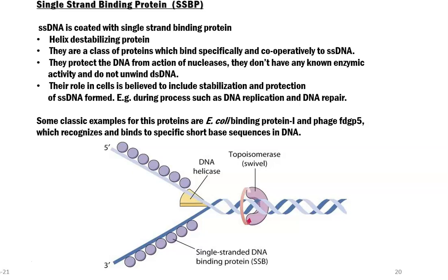This protein is also referred to as helicase destabilizing protein. These are a class of proteins which bind specifically and cooperatively to the single strand DNA molecule after the activity of the helicase enzyme. Their main function is to protect the DNA from the action of host nucleases. However, they don't have any known enzymatic activity and do not even unwind the double stranded DNA — that is why it is referred to as a protein and not as an enzyme.